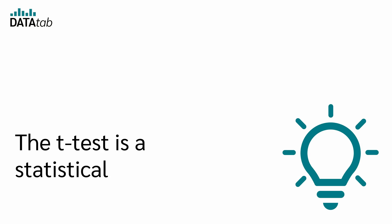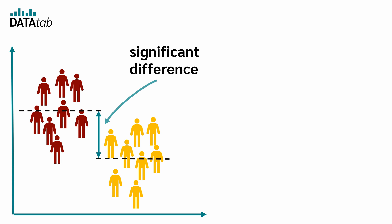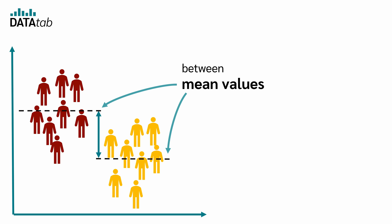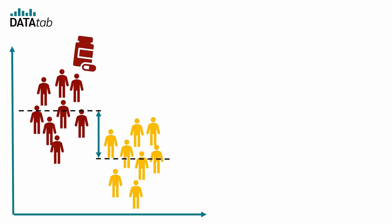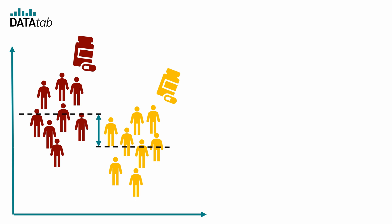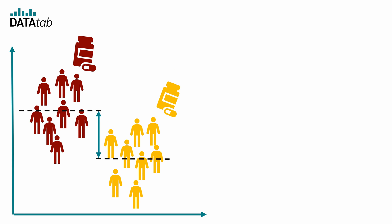The t-test is a statistical test procedure. The t-test analyzes whether there is a significant difference between the means of two groups. For example, the two groups may consist of patients where one group received drug A and the other group received drug B. We now want to determine if there is a difference in blood pressure between these two groups.